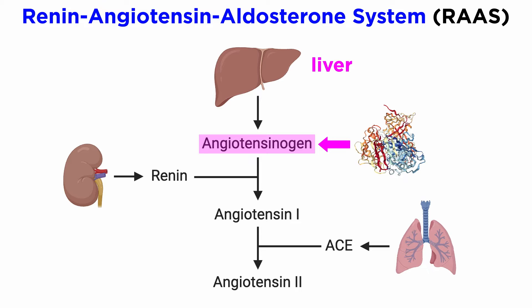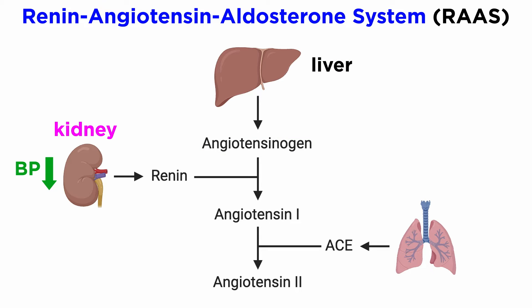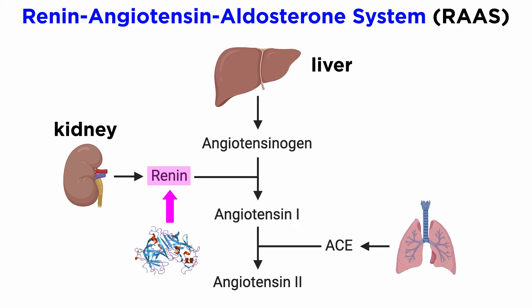First, the liver tonically secretes angiotensinogen, a precursor to angiotensin-1, the inactive version of angiotensin. When juxtaglomerular cells in the kidney detect a reduction in blood pressure via stretch receptors in blood vessels, renin release is increased. Renin release is also triggered by increases in sympathetic nervous system tone and decreased Na+ and Cl- at the juxtaglomerular apparatus. Renin is an enzyme that catalyzes the conversion of angiotensinogen to angiotensin-1.